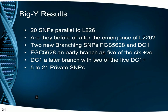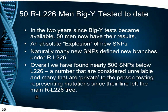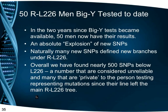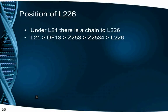It was an exciting time looking through the lists of new SNPs that each of us had. Each person in this first batch also had between five and 21 private SNPs. But in the two years since the Big Y testing began, 50 Irish Type 3 men have now been tested and there's been an absolute explosion of new SNPs found, many defining new branches but the majority being private to that tester, representing mutations since their line left the L226 tree.